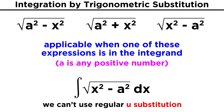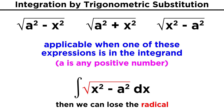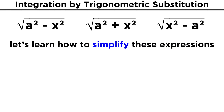With integrands like these, we will see that the substitution rule will not work, because there is no term present to act as du. But there is a different type of substitution we can use if we realize that we can change x into something else that will result in the ability to get rid of the radical. Let's first see what we can do to simplify these three expressions, and then we will put that into the greater context of integration.